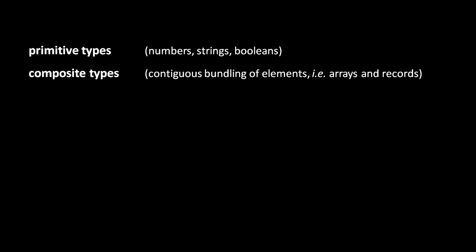Very importantly though, these various things which make up that person — if this is truly just a record — they are placed contiguously in memory, one after the other. For efficiency reasons, you might have padding in between the elements, but aside from that, all the pieces are contiguous.